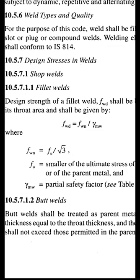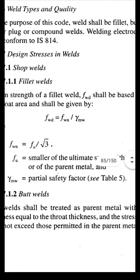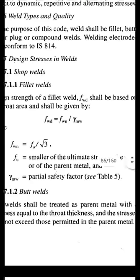γmw is the partial safety factor from Table 5, page 30, and depends upon the fabrication location. If fabrication is in the shop, γmw = 1.25. If fabrication is in the field, the value is 1.5.